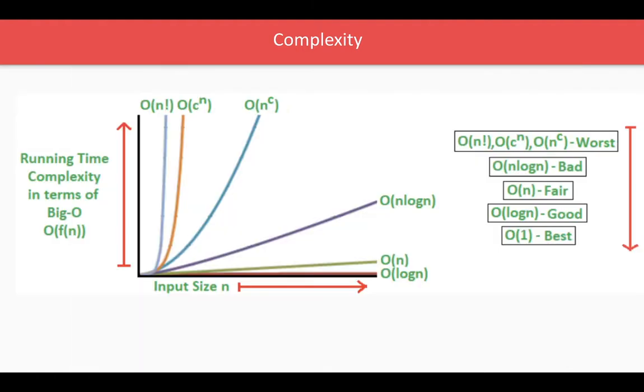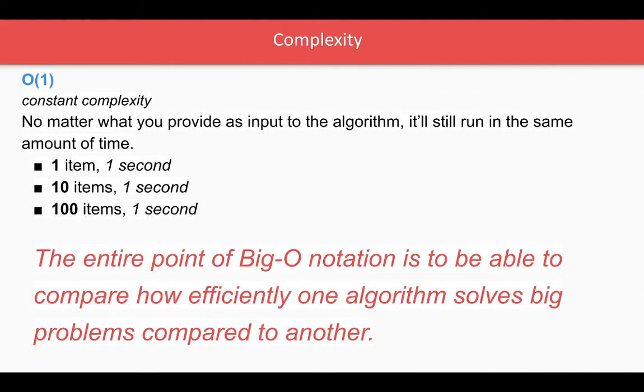Like O(1)—no matter what you provide as input, it's going to return output in one second. The time is constant. Data keeps increasing, but the time is constant. That's O(1) complexity. We'll talk about examples of this.